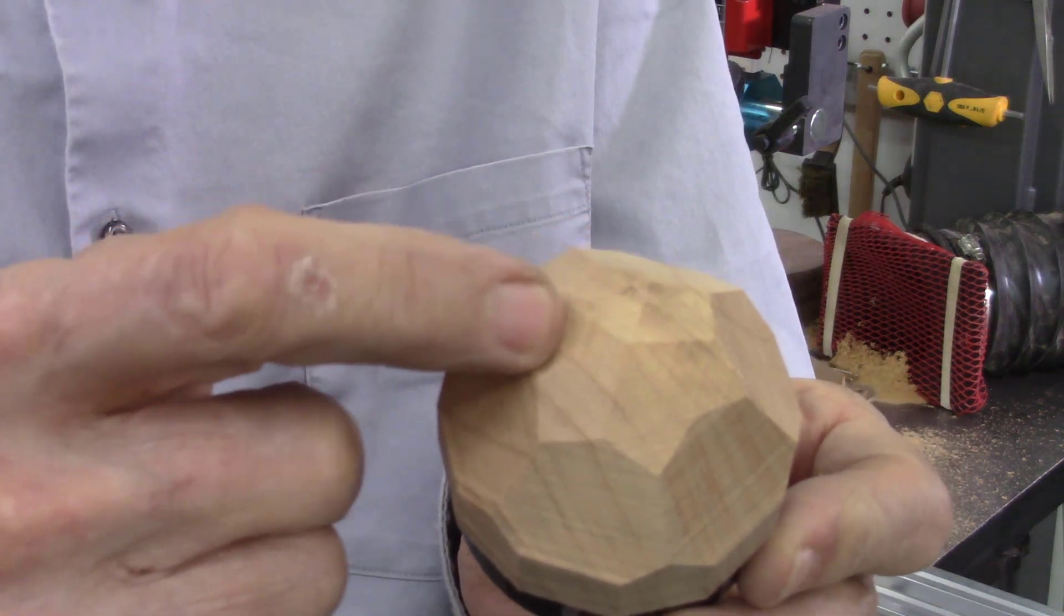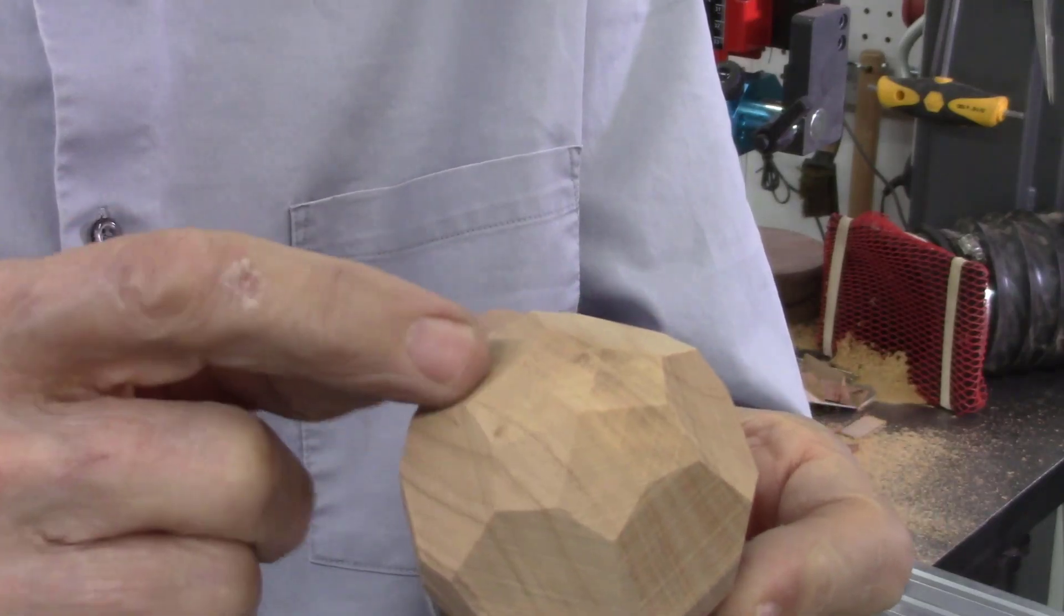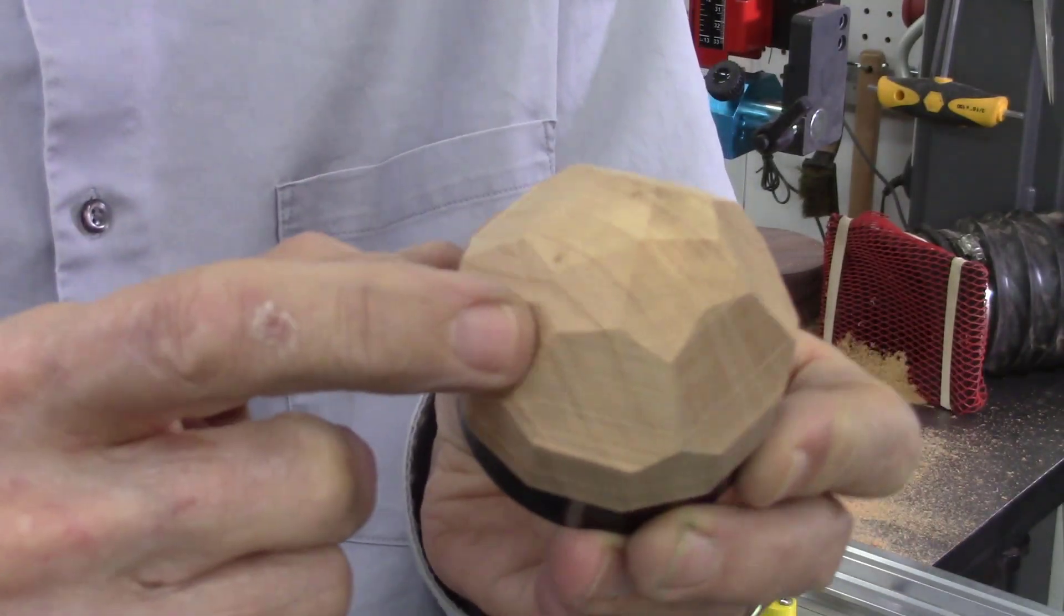And now you can see what I did. That first cut I cut six at that angle, then I changed it a half a step over to cut the facets on this side.